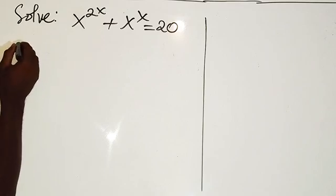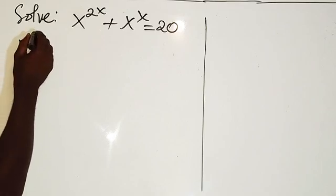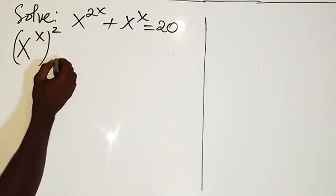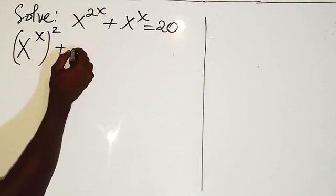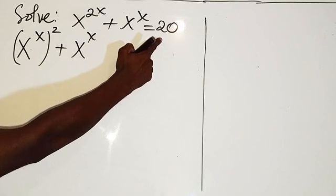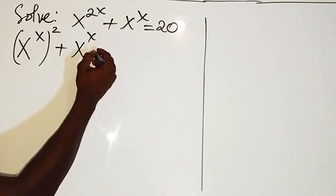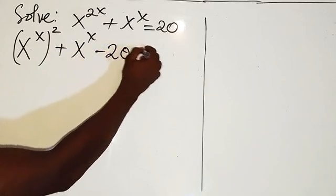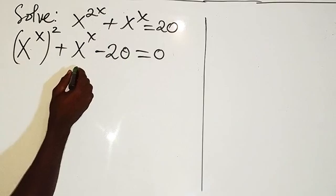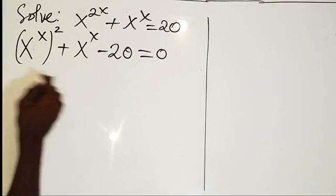So now from here, let's start. I can write this equation as x to power x, then to power 2, plus x to power x. Then I can transpose this 20 here to the left-hand side to be minus 20 equals 0. So now what did I do here? You know that from the indices...